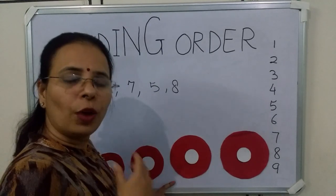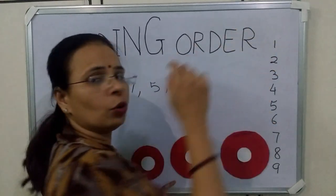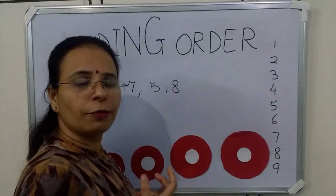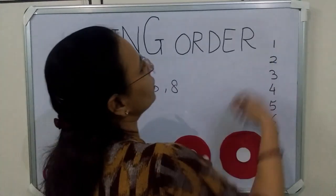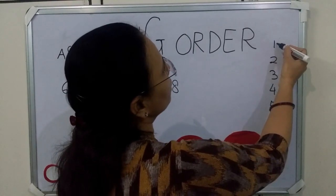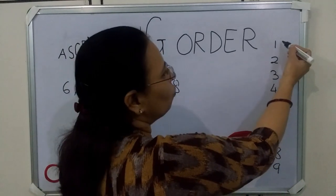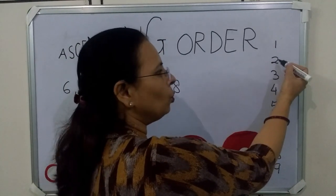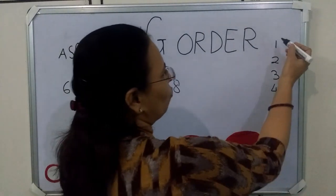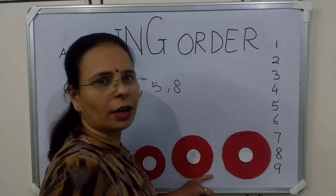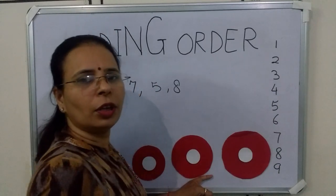One more thing: when counting numbers, the number which we say first is small. You can see 1 is smaller than 2. 1 and 2 are smaller than 3. 1, 2, 3 are smaller than 4, and so on.